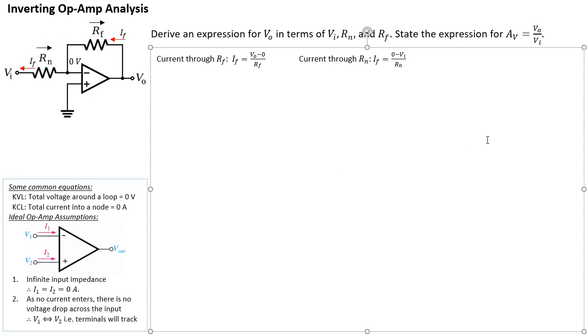So we can equate the two because they are both IF. Equating IF through RF and RN. So straight away, we can say that the first one is going to be equal to the second one. So that's VO. Well, VO minus zero is just VO. So it's just going to say VO divided by RF. It's going to be equal to, well, what is zero minus VI? Which is negative VI, basically. So negative VI divided by RN.